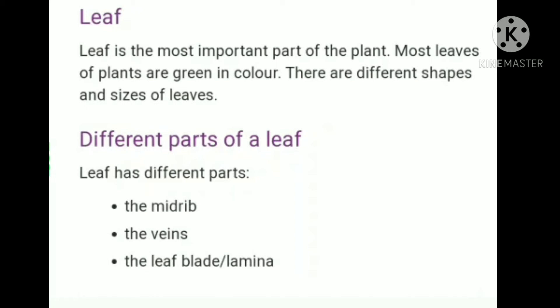First one: leaf. Leaf is the most important part of the plant. Most leaves of plants are green in color. There are different shapes and sizes of leaves. Mostly leaves are green in color because this green color in leaves helps them to make food by the process of photosynthesis. This green color is called chlorophyll.